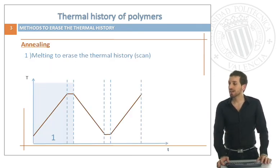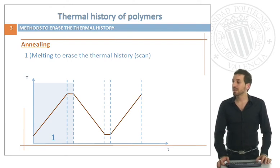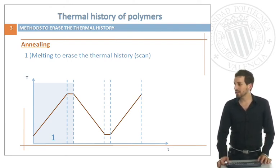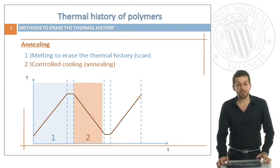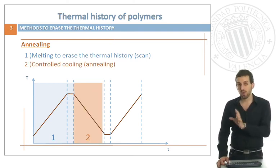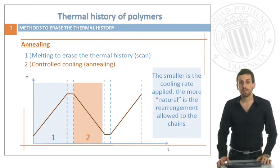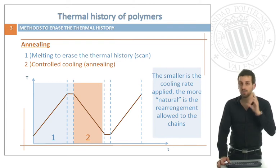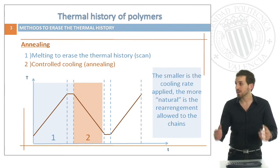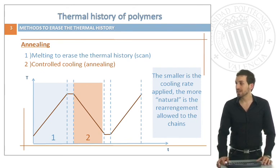In order to perform this annealing, we will first melt to erase the thermal history of the scan and then we will apply a controlled cooling, which is quite slow and that's the reason why it's called annealing. You have to know that the smaller the cooling rate applied, the more natural the rearrangement allowed to the chains. That's very important.